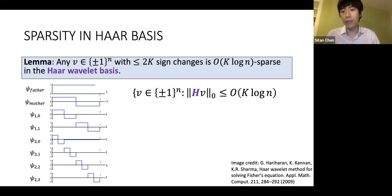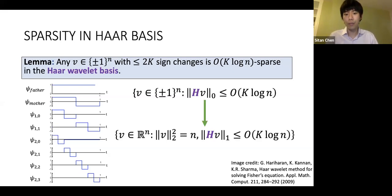If I now relax from bounded sign change vectors to just bit strings which have Haar sparse representation, first of all, this is still not a convex constraint, but now it's straightforward to relax to some kind of analytic sparsity notion.